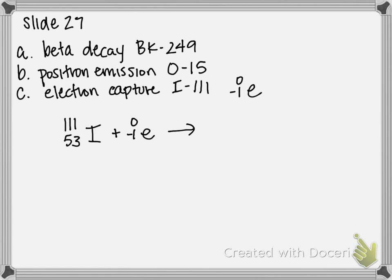So now it's not a case of subtracting. It's a case of adding these two together, the numbers to figure out what element we're forming. So 111 plus 0 gives you 111. And 53 plus negative 1 gives you 52.